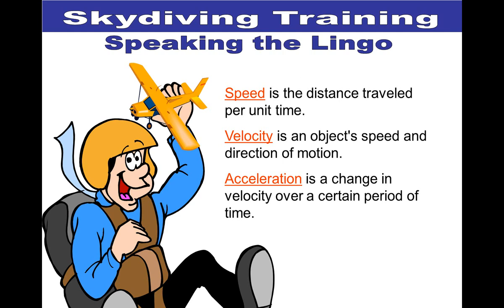A vector quantity has both magnitude and direction — either up or down, left or right, positive or negative. An example of a vector quantity could be your checking account: you could have $20 in the account or be negative $20 and overdrawn. That makes it a vector quantity because it has both a direction and a number. Speed is the distance you travel per unit of time — it is a scalar quantity because it doesn't matter whether you traveled north or south, east or west.